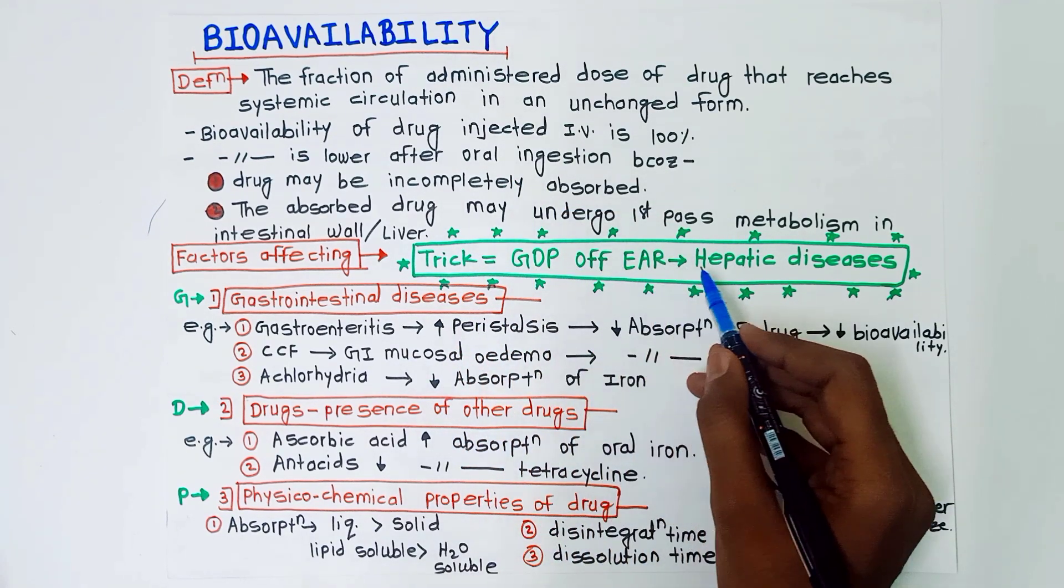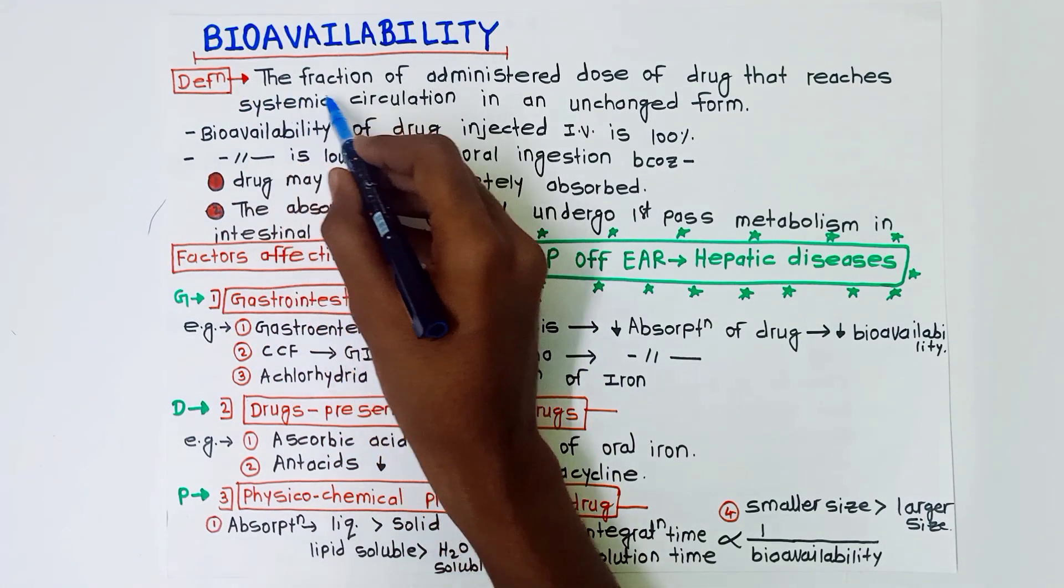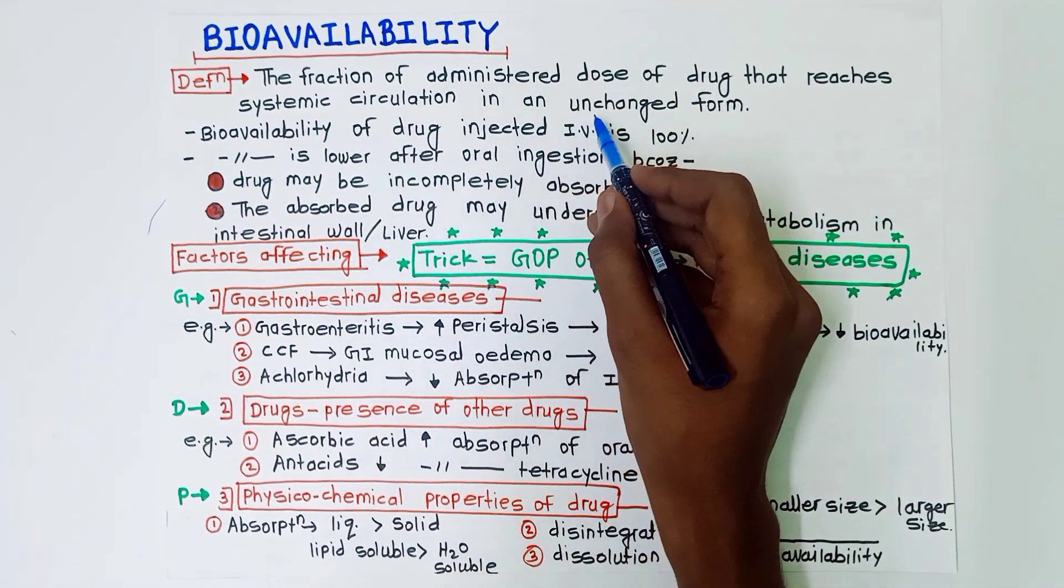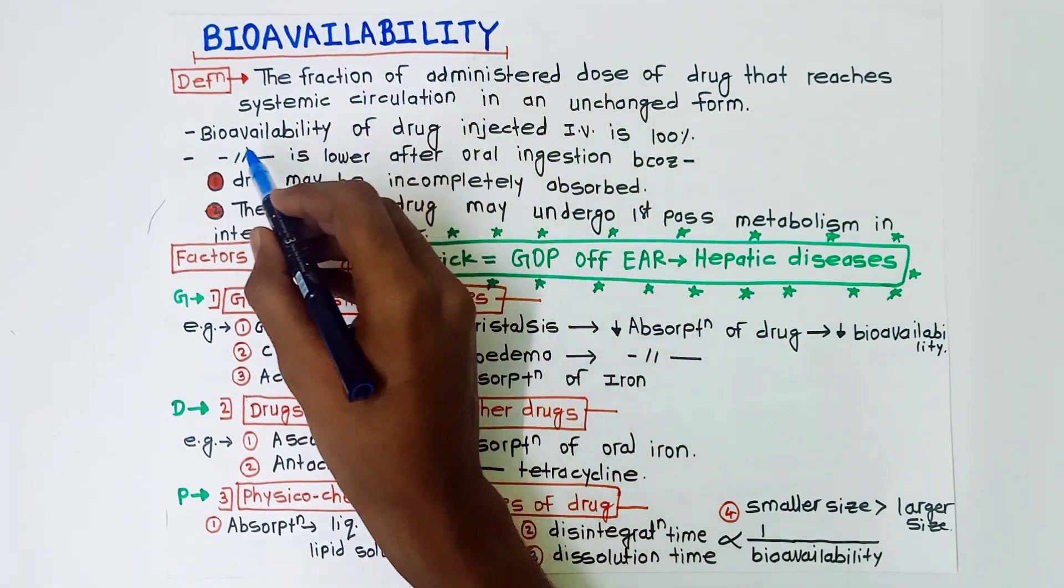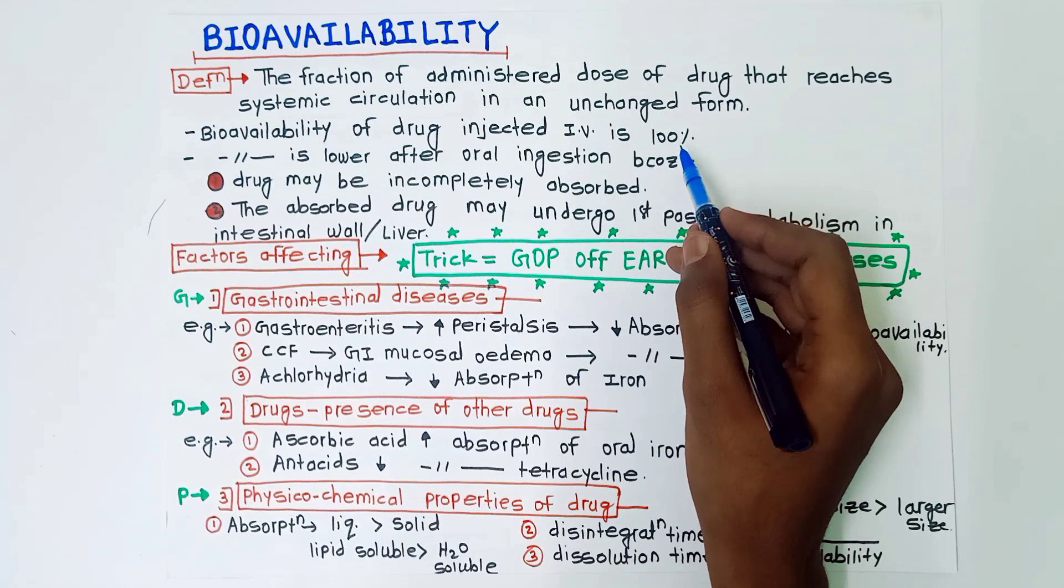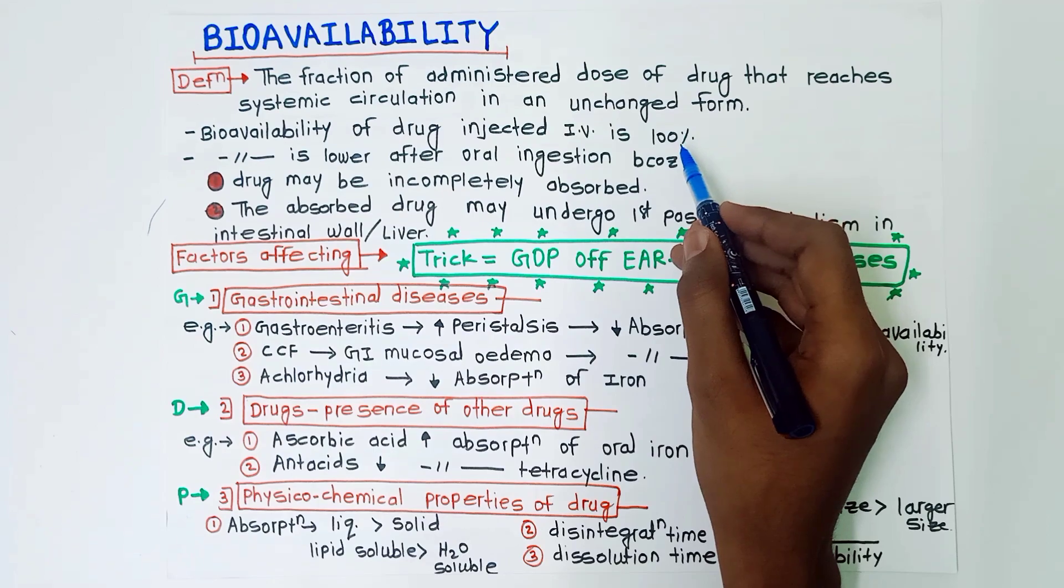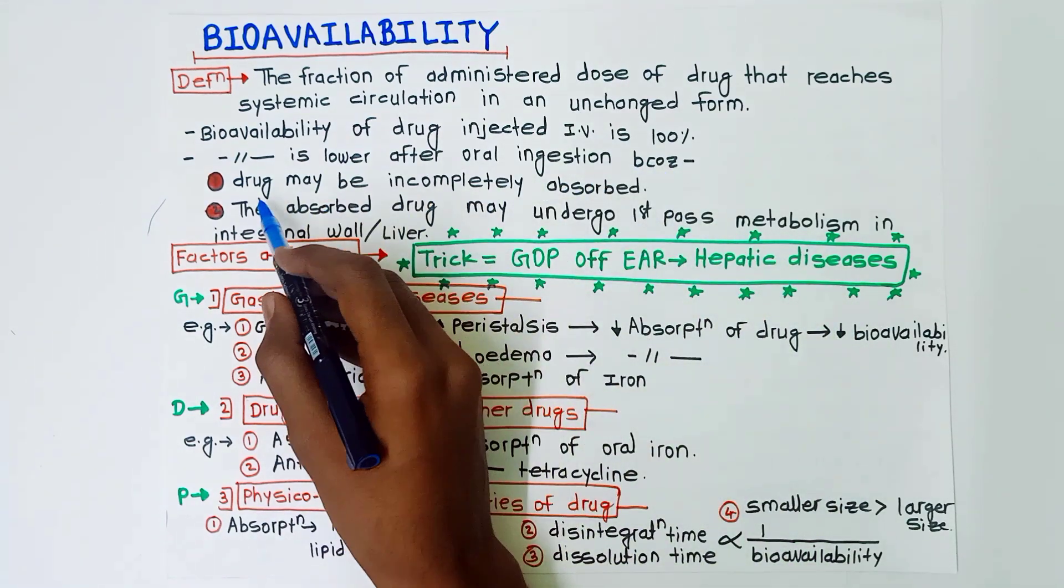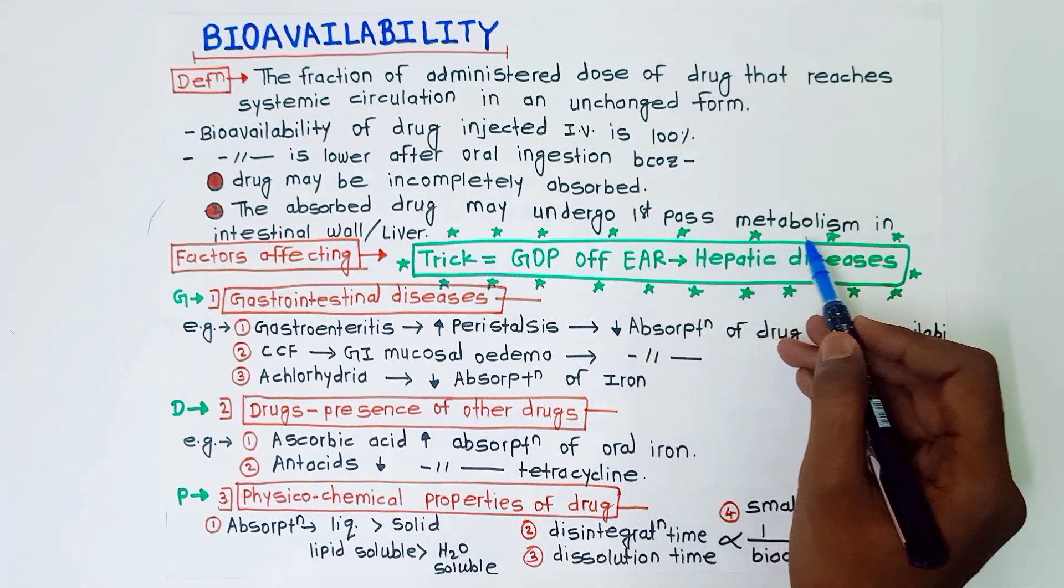First of all, definition. The fraction of administered dose of drug that reaches systemic circulation in an unchanged form, this is called as bioavailability. Bioavailability of drug injected intravenously is hundred percent. It means the intravenous route of drug administration has hundred percent bioavailability. It is lower after oral ingestion because the drug may be incompletely absorbed or absorbed drug may undergo first-pass metabolism in intestinal wall or liver.